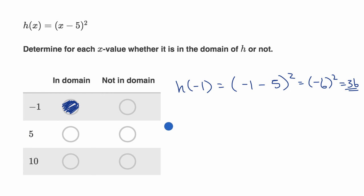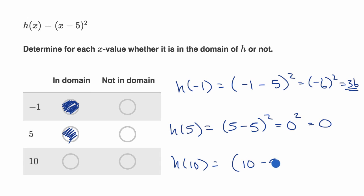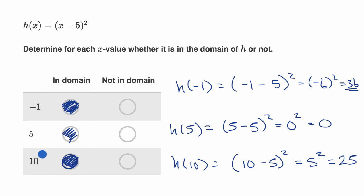What about x equals five? h of five is equal to five minus five, squared. You might be worried seeing a zero, but we're just squaring zero, not dividing by it, which is completely legitimate. Zero squared is just zero, so h of five is very much defined — it's in the domain. And h of 10 equals ten minus five, squared, which is five squared, which equals 25 — a very legitimate output. So the function is definitely defined for x equals 10, and we're done.